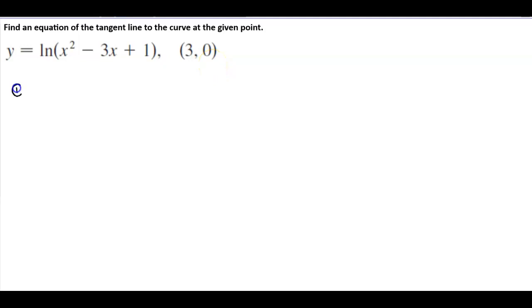So the first thing we need to do is find the derivative of this function. So y prime, well since it's the natural log, it's going to be 1 over what's inside the parentheses, which is x squared minus 3x plus 1, times the derivative of what's inside. The derivative of x squared is 2x minus 3. And so therefore, the derivative of this function is going to be 2x minus 3 over x squared minus 3x plus 1.